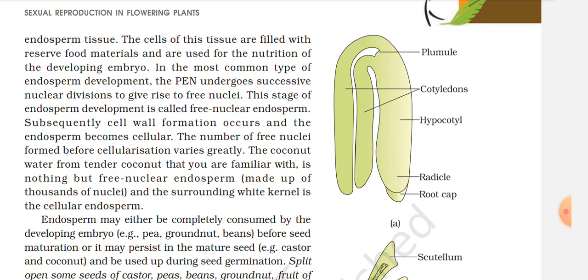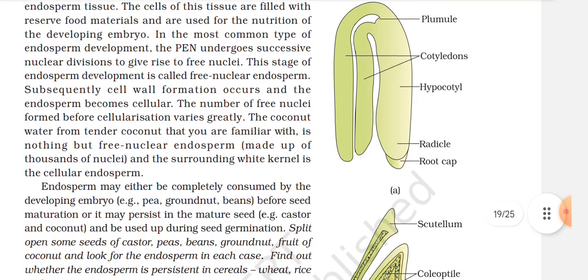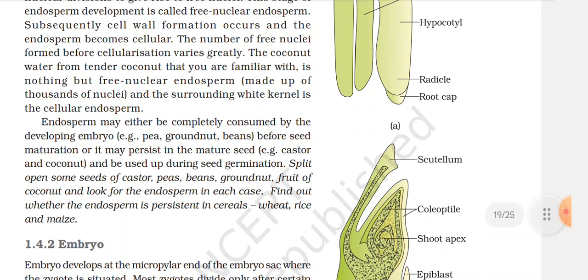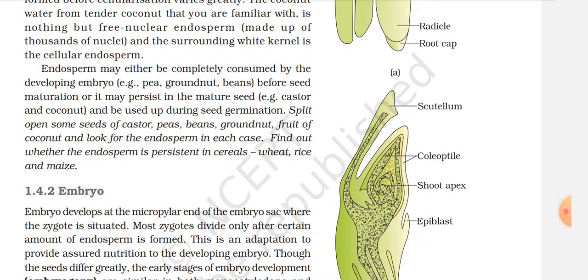Subsequently, cell wall formation occurs and the endosperm becomes cellular. The number of free nuclei formed before cellularization varies greatly. The coconut water from tender coconut is nothing but free nuclear endosperm made up of thousands of nuclei, and the surrounding white kernel is the cellular endosperm. Endosperm may either be completely consumed by the developing embryo before seed maturation — e.g., pea, groundnut, beans — or it may persist in the mature seed — e.g., castor, coconut — and be used during seed germination.